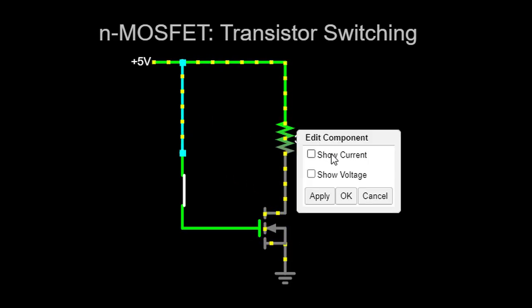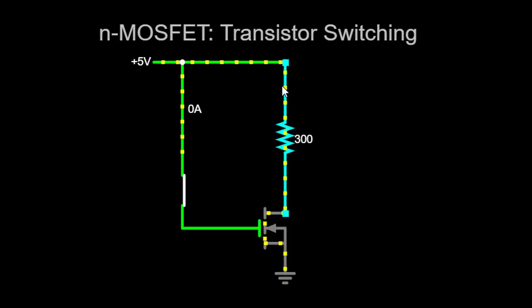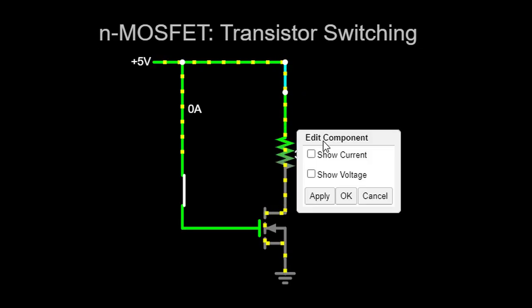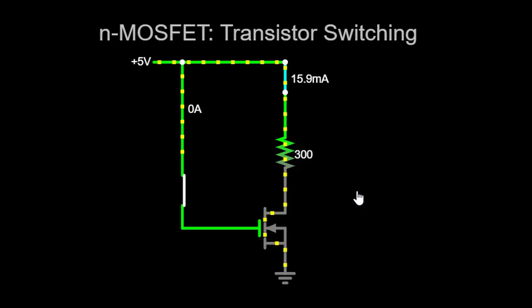Throughout this process, a voltage drop occurs across the resistor due to the current passing through it. The remaining voltage is then observed at the source terminal. The N-MOSFET effectively acts as a closed switch, allowing current to flow through the circuit.